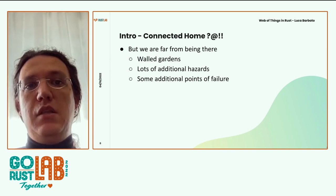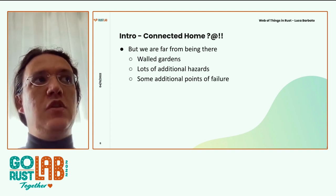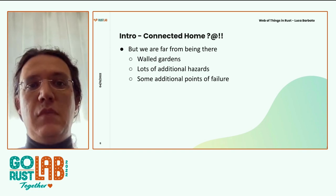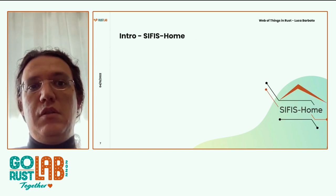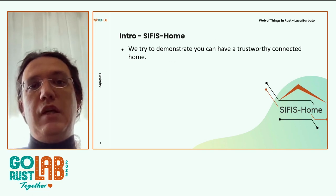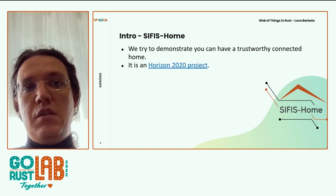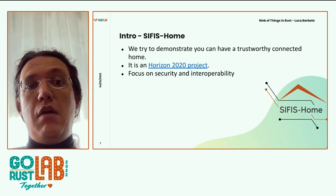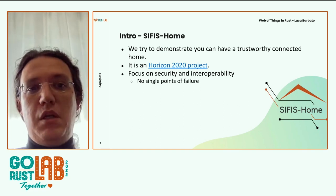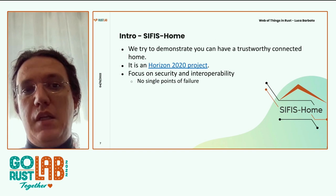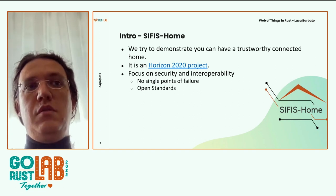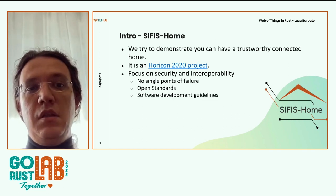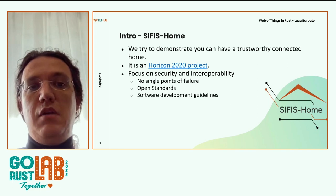Home Assistant was great and is still great at solving some of these problems, but it's sort of a patch. What we are trying to do in CIVITAS Home is prove that you can have a trustworthy connected home. It is a Horizon 2020 project, so we managed to convince somebody in the European Commission that our ideas are good. Our focus is on the interoperability part and the security part — we don't want single points of failure, we want to use and propose open standards, and we want the software in our house to not suck.